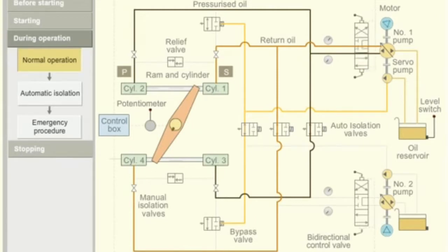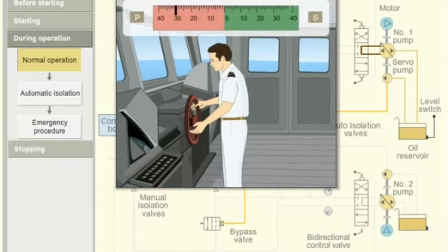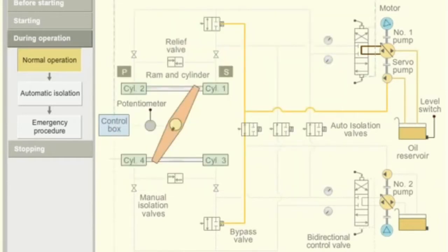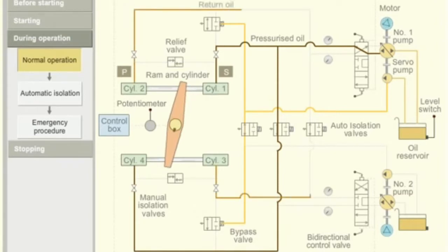This blocks the oil flow and stops the movement of the ram. When starboard order is given from the bridge, the control box sends a signal to bi-directional control valve. The valve moves aft side. The pressurized oil is pumped into ram 1 and 4. The pressurized oil moves the ram.